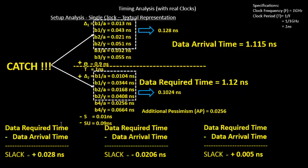So even after implementing OCV and seeing a negative slack, that circuit still has hope of working at 1 GHz once you account for the additional pessimism AP to get a positive slack. That's the whole point of the pessimism term in setup timing analysis. In the next video, we'll look into the same concept for hold timing — converting the hold time graphical representation to a textual one and doing the complete calculation: without OCV, with OCV, and with OCV additional pessimism removed.